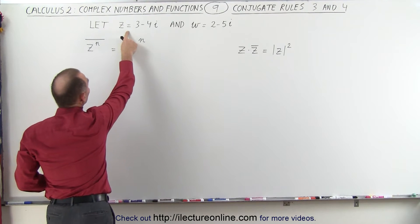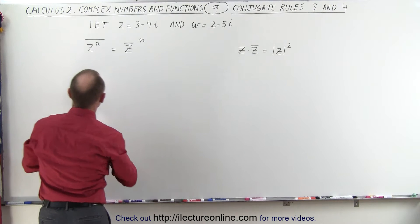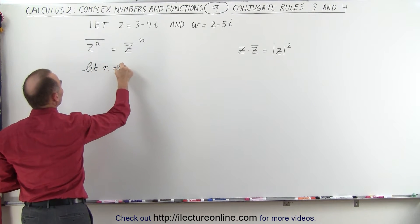Here we're going to take z equals 3 minus 4i. We're going to let n equals 2. So again, we can do that with any number n, but let n equals 2, which is a little bit easier.